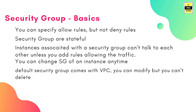Now let us go through some of the basics of security groups. In a security group, you can only specify allow rules, but not deny rules — that is a difference compared to network ACL. Security groups are stateful, which means if you send a request from your instance and get a response, that response is inbound traffic. You don't need to explicitly mention it in the inbound and outbound list because when you add an inbound rule, the outbound is automatically added to the list.